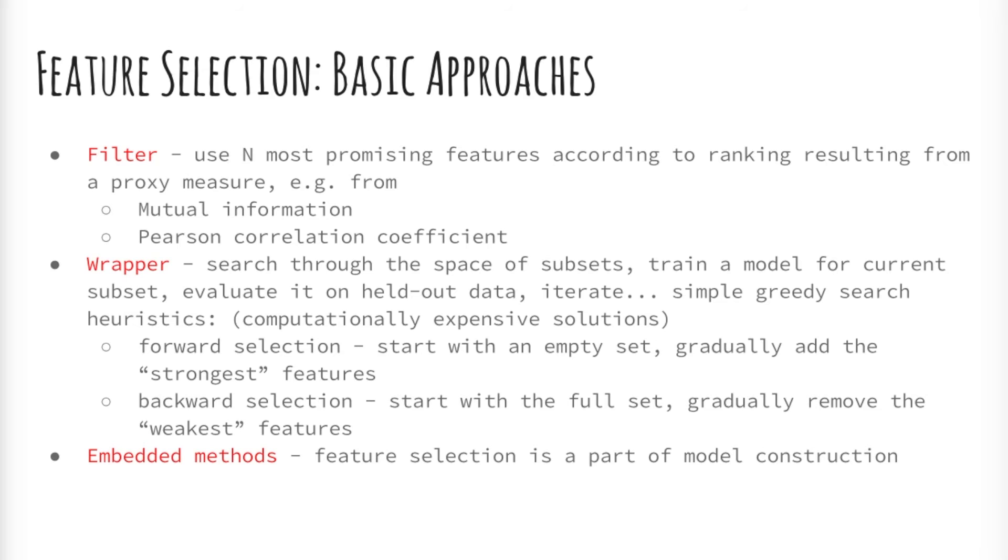There are three general classes of feature selection algorithms: filter methods, wrapper methods, and embedded methods. Filter methods apply a statistical measure to assign a scoring to each feature. The features are ranked by the score and either selected to be kept or removed from the data set. The methods are often univariate and consider the feature independently or with regard to the dependent variable. Examples of some filter methods include the chi-squared test, information gain, and correlation coefficient scores.